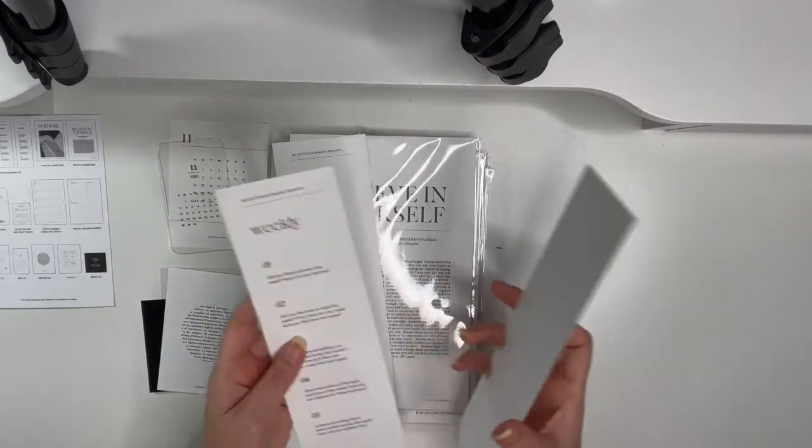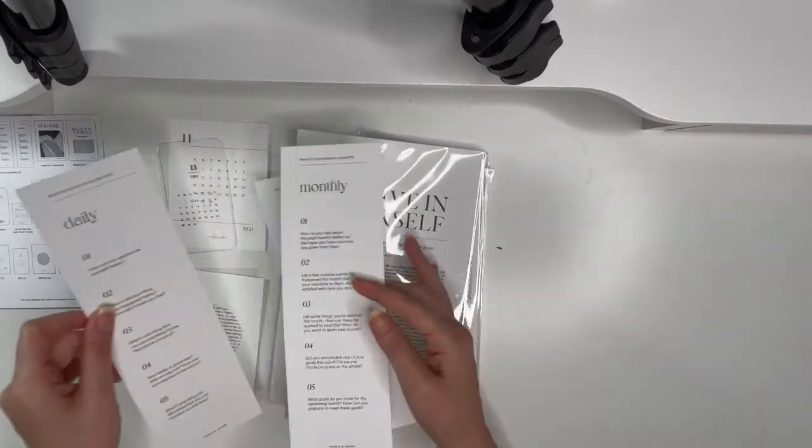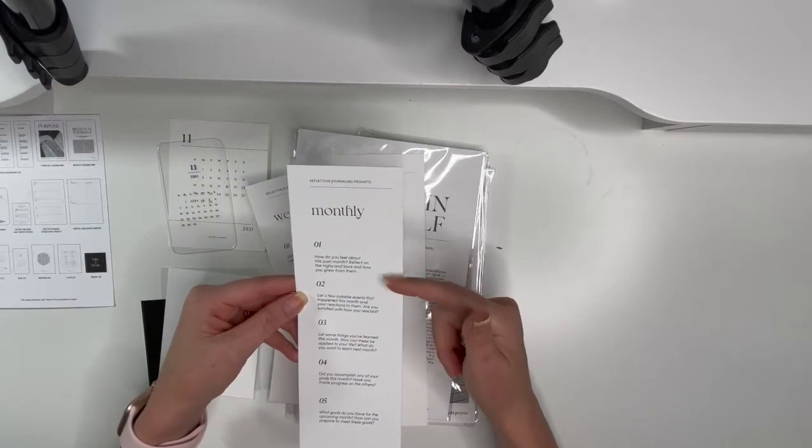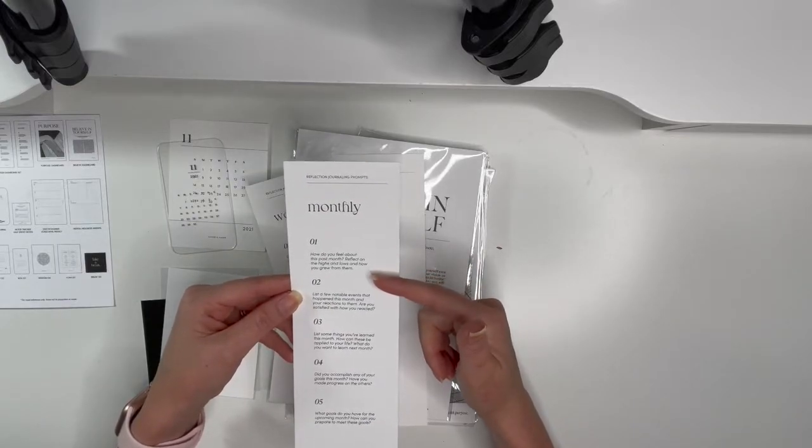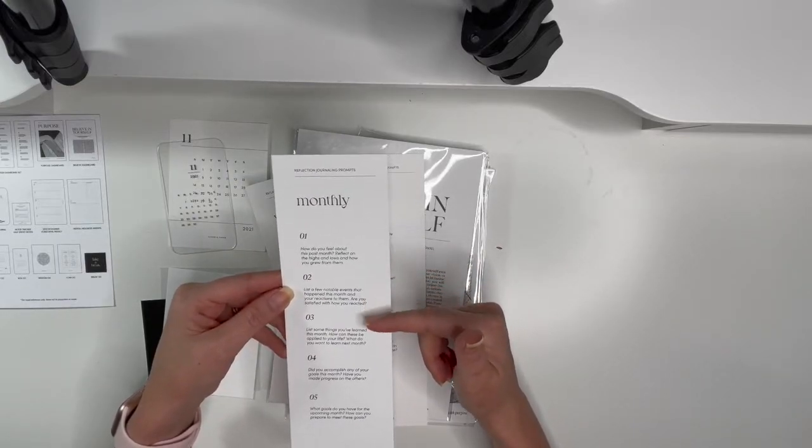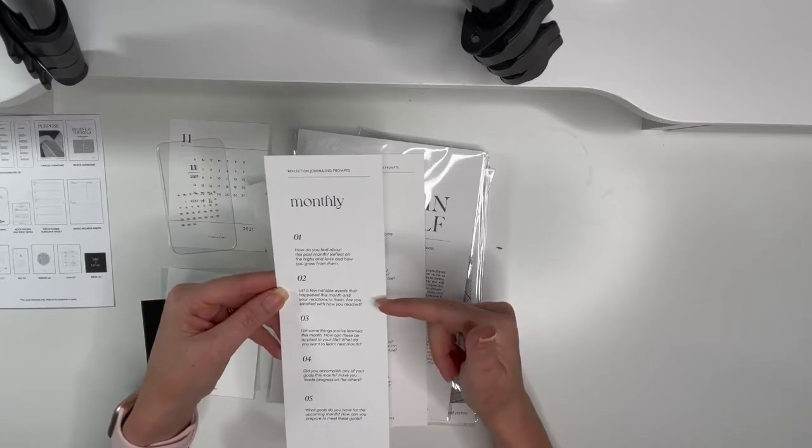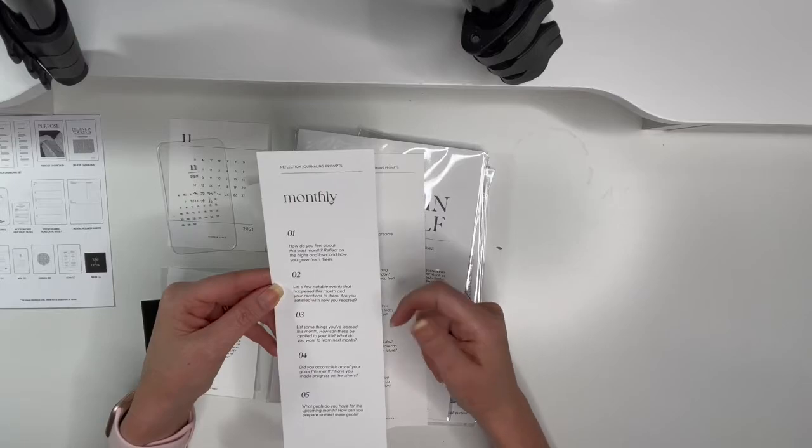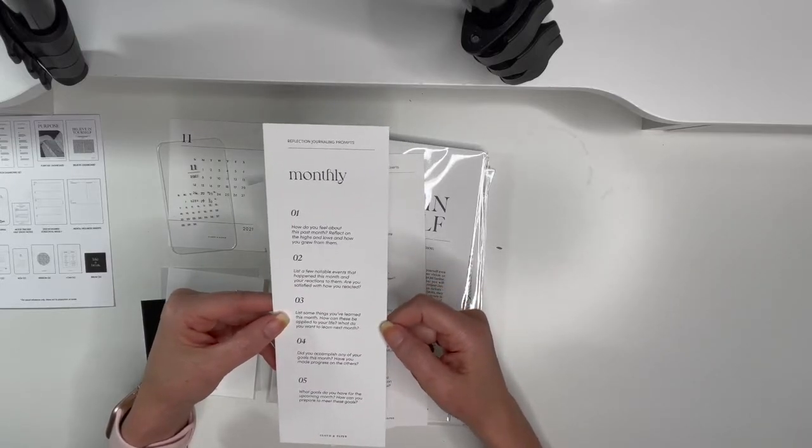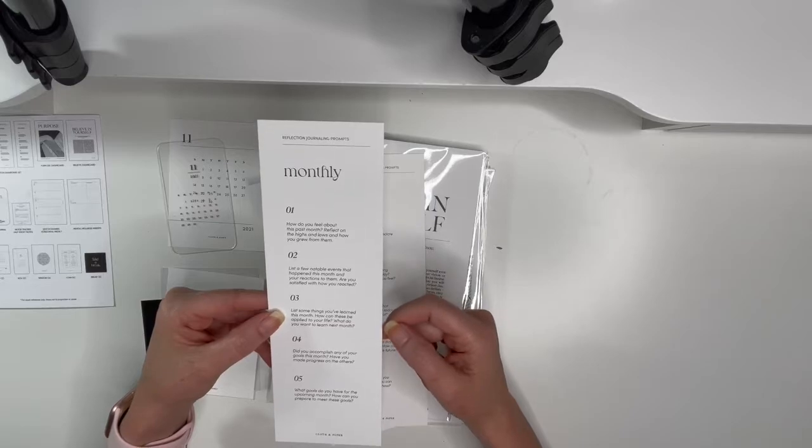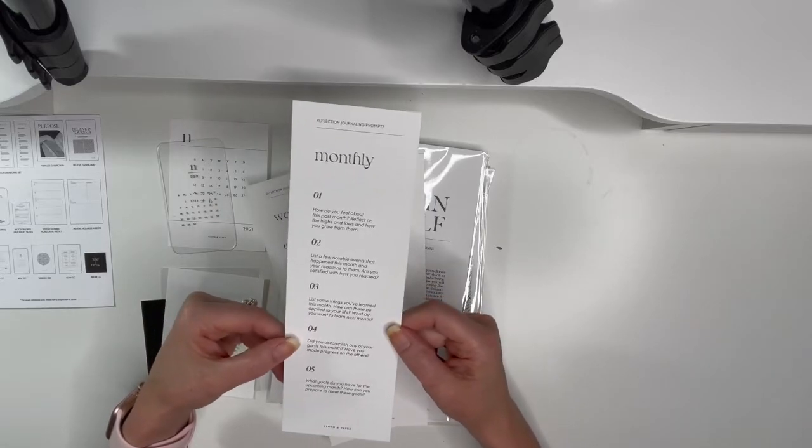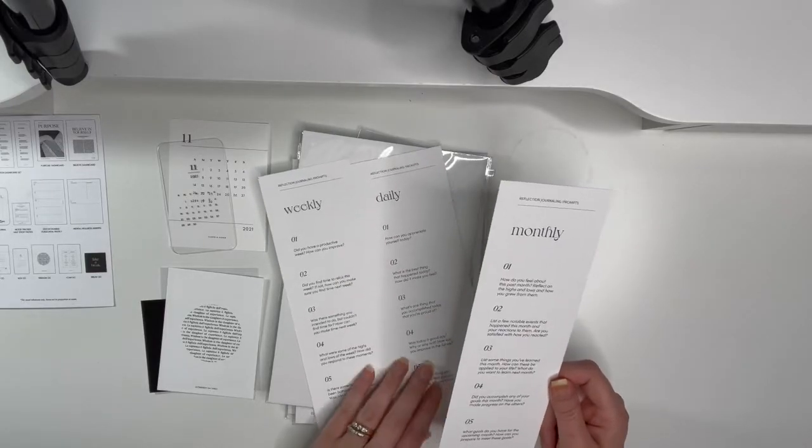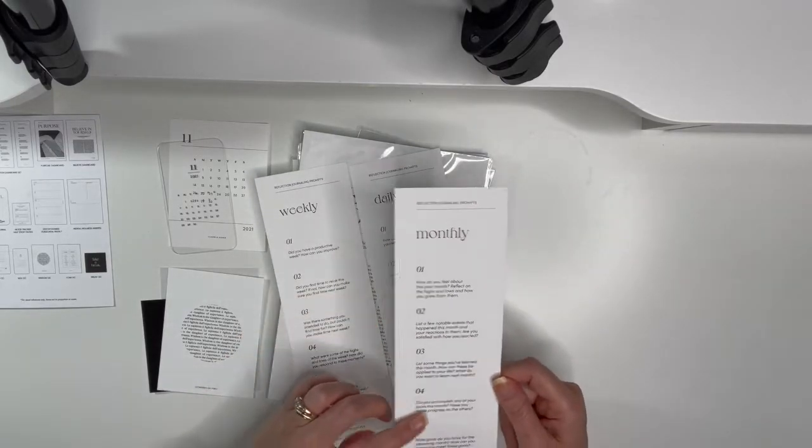Monthly, daily, and weekly. Oh isn't that neat? So monthly, there looks like there's five on each. How do you feel about this past month? Reflect on the highs and lows and how you grew from them. Number two, list a few notable events that happened this month and your reactions to them. Are you satisfied with how you reacted? List some things you've learned this month, how can these be applied to your life? What do you want to learn next month?